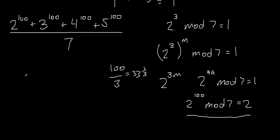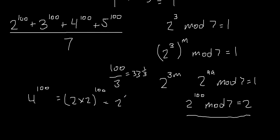Now let's tackle the second part. Remember, if you have 4 to the power of 100, 4 is just 2 times 2. So 4 to the power of 100 is 2 times 2 to the power of 100, which is 2 to the power of 200 — or equivalently, 2 to the power of 100, squared. So if it's 2 to the power of 100 squared, the remainder also gets squared. So 4 to the power of 100 mod 7 equals 2 squared, which is 4.